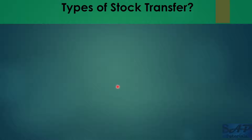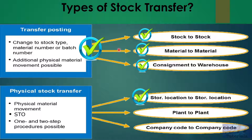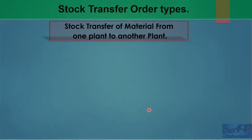We have already covered what is stock transfer in the previous video, where we covered stock-to-stock, material-to-material, consignment, warehouse, and subcontracting stock. We also covered physical movement of stock transfer — storage location to storage location — and partially plant-to-plant with one or two-step movement. Today we will focus on the STO part, specifically plant-to-plant stock transfer using STO but without delivery or logistic execution.